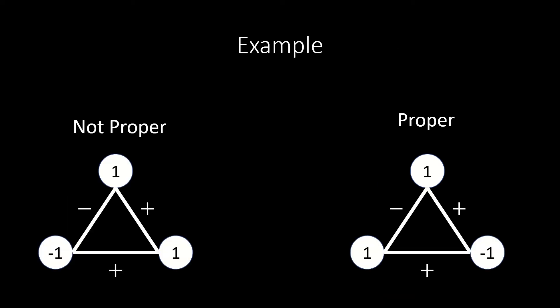Here is a side-by-side comparison of an improper coloring — that is, one that violates our rules — and a proper coloring of a sign graph. Note that in the improper coloring, we have a positive edge linking vertices with the same color, and a negative edge linking vertices of additive inverse colors. Both are not allowed.